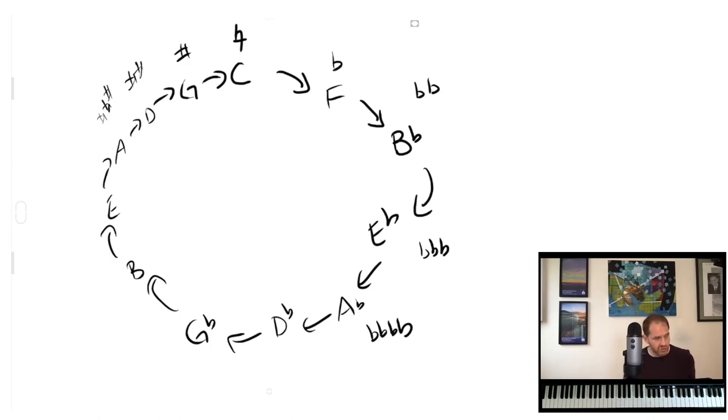As you go to the right, you're adding flats to the key signatures. C has no sharps or flats, F has one flat, B flat has two flats, E flat three, etc. As you go to the left side, G has one sharp, D has two sharps, A has three sharps, etc. So you can see what keys only have one note difference, because those are usually going to be the good keys to modulate to.